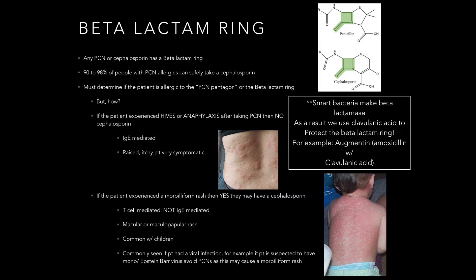When would we use something like Augmentin or amoxicillin with clavulanic acid? If our patients have had another antibiotic within 90 days previously, we want to assume that whatever bacteria they're infected with now has the ability to break down the beta-lactam ring — has that beta-lactamase. So we want to use something stronger that can protect that ring, like Augmentin.